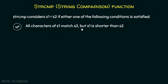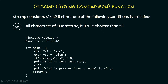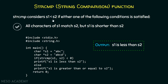The second condition for strcmp considering s1 less than s2 is when all characters of s1 match s2 but s1 is shorter than s2. For instance, if s1 is 'abc' and s2 is 'abcd', strcmp returns a value less than zero and the output is 's1 is less than s2'. Similarly, for s1 greater than s2 the opposite applies, and for s1 equal to s2 both strings must be fully equivalent.